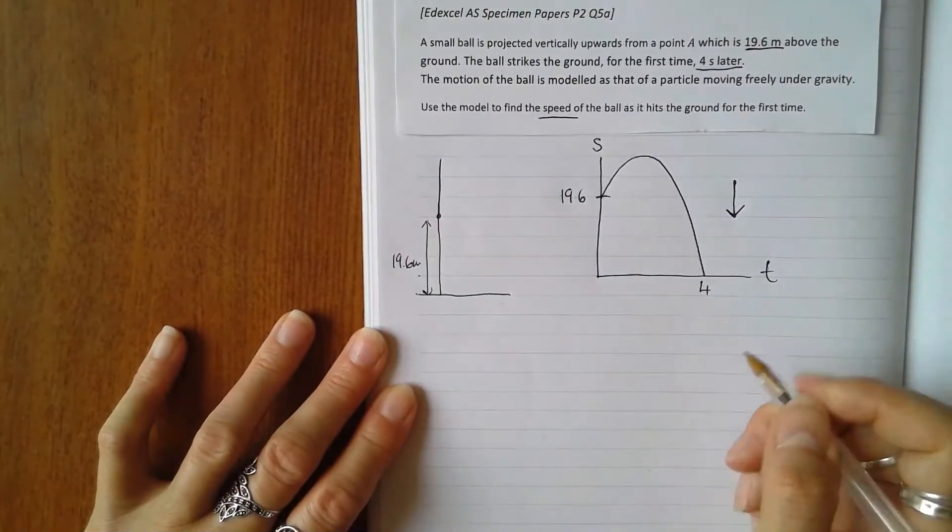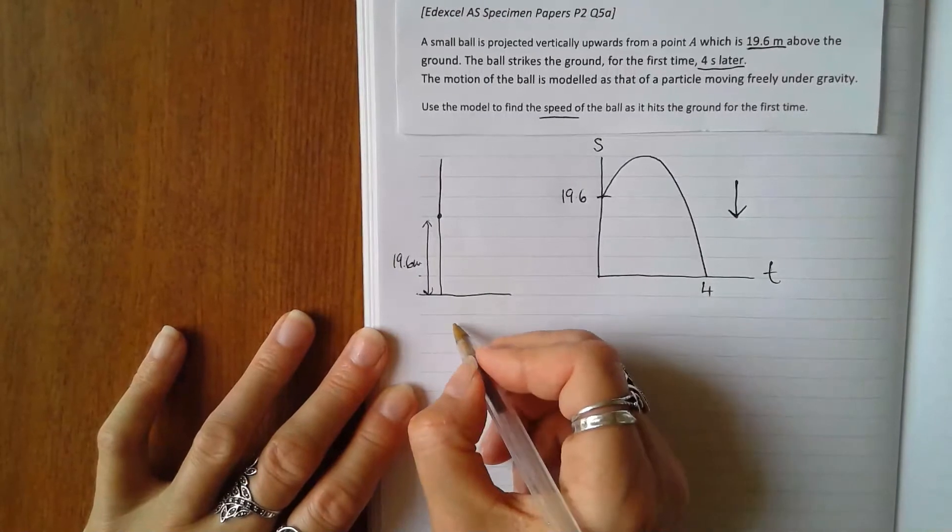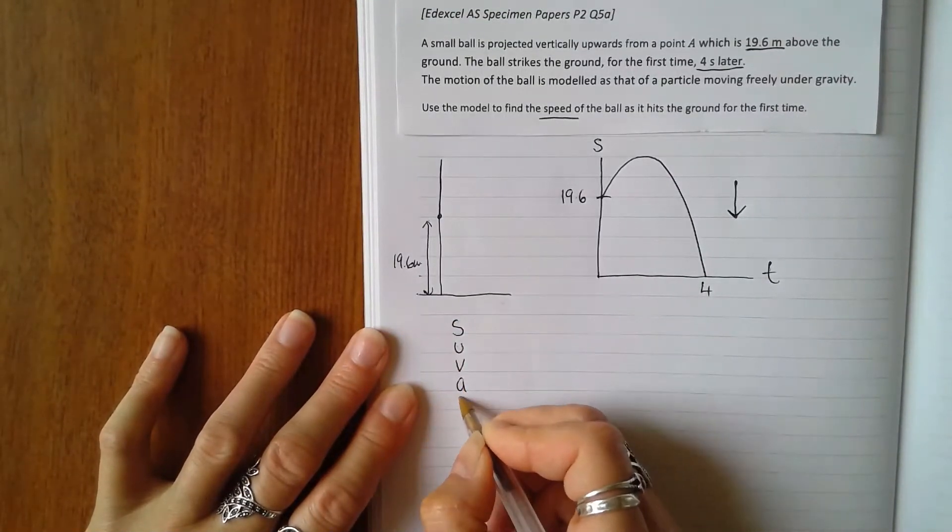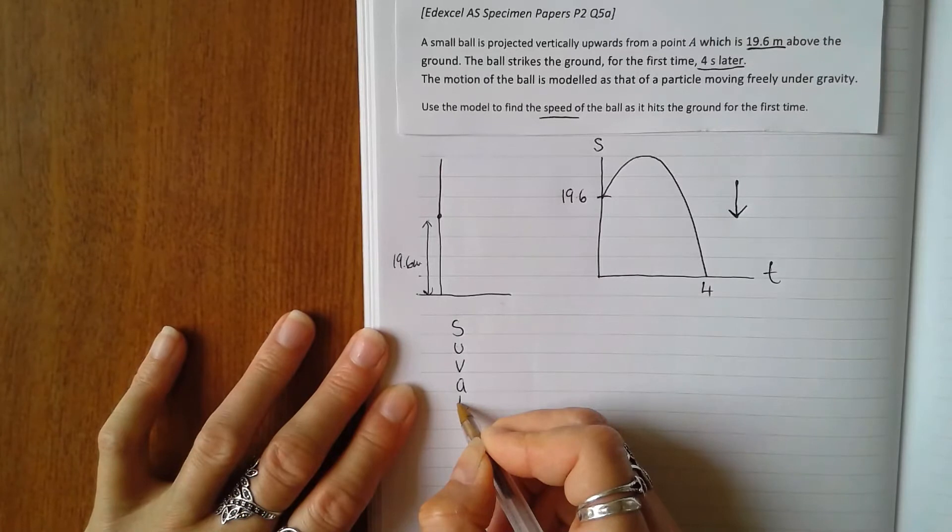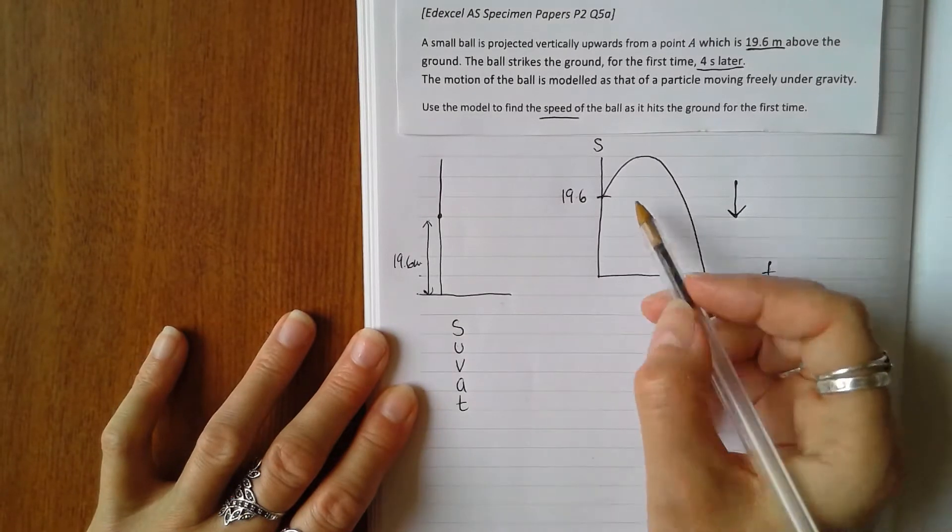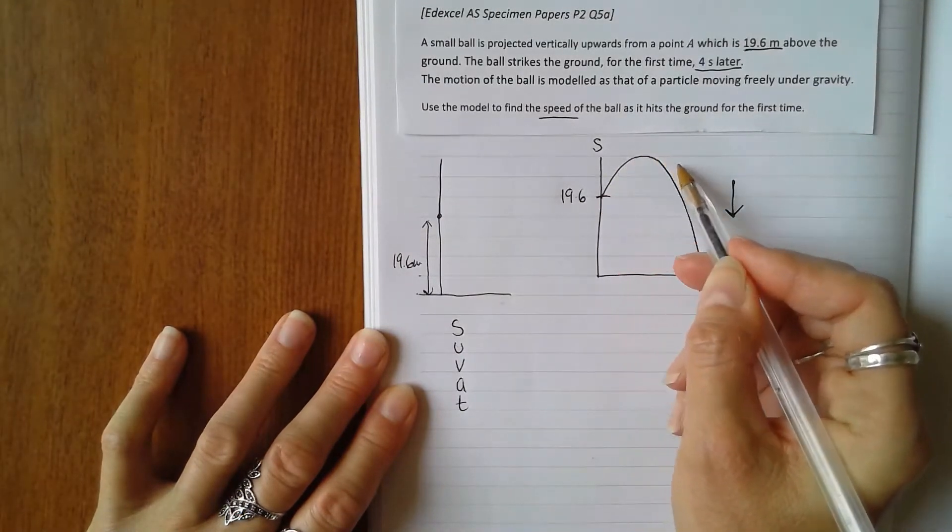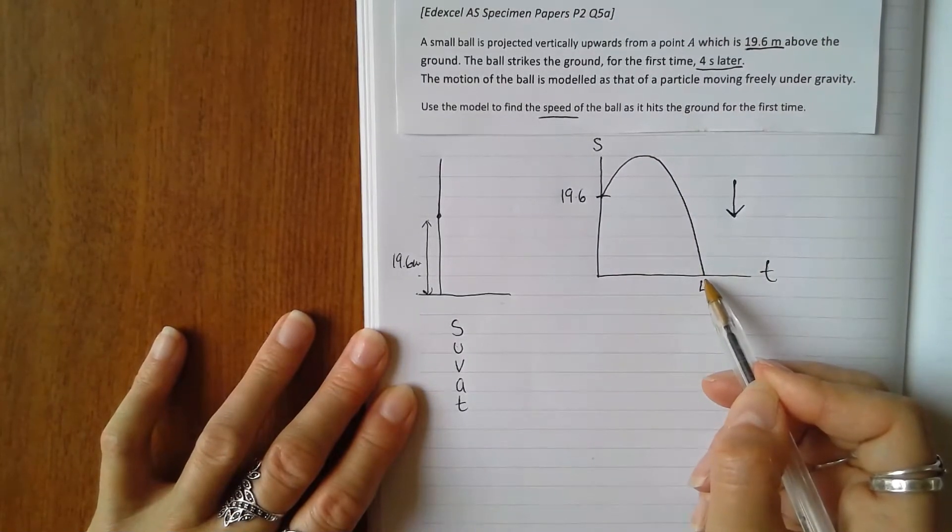First of all, fill in the SUVAT values. We know that its distance traveled is from 19.6 meters above the ground; it's going up and then back down.